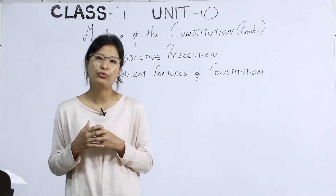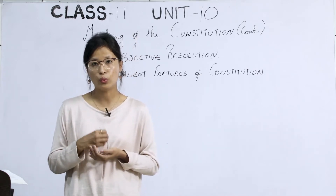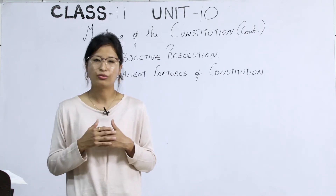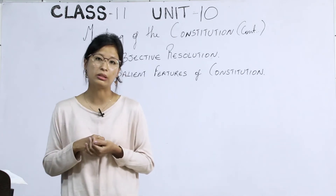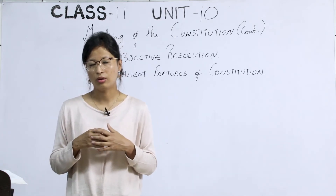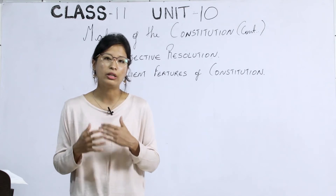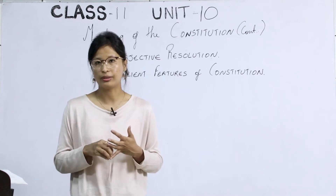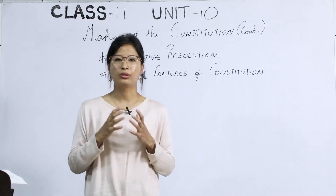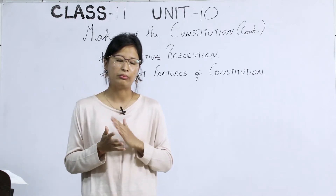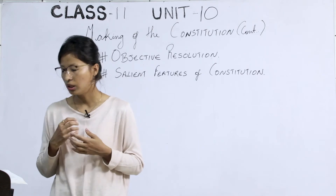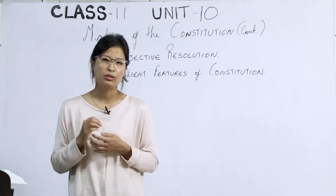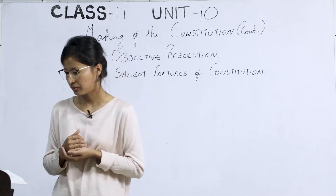Points one through six talk about what India wants to do for her people and what India wants to defend — for example, territory. The last point, number seven, talks about how India should also make a contribution in maintaining world peace as well as the welfare of mankind. These are the seven important points put forward by Nehru.